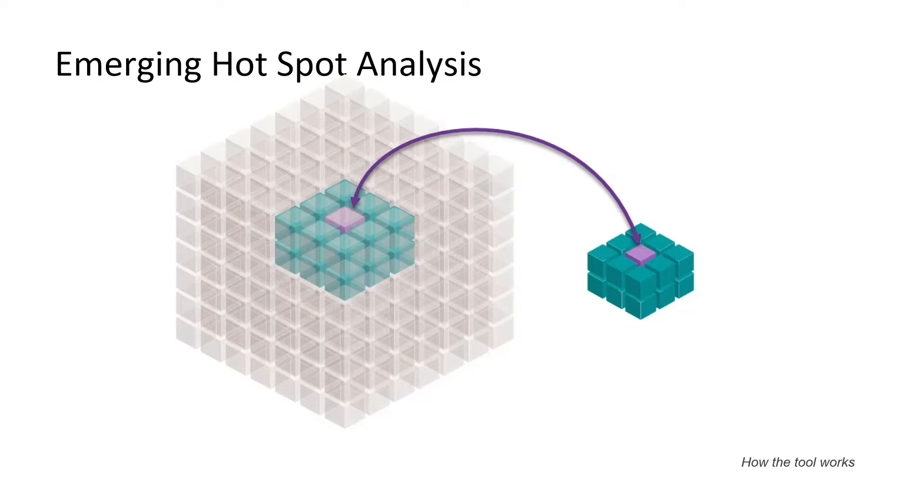In this graphic, the spacetime neighborhood consists of each county's closest eight neighbors in space for both the current and the previous four-week time period. And the tool assesses, are the values in this bin and its neighboring bins significantly different from the values for all the bins in the cube? The tool processes each bin in the context of its neighboring bins,